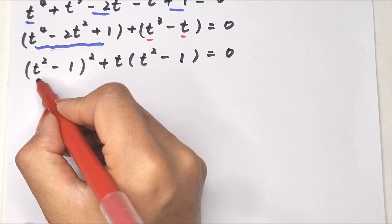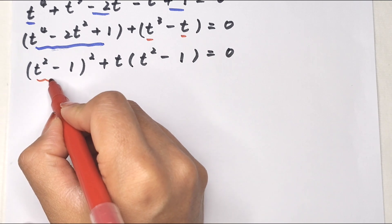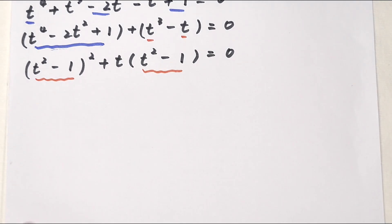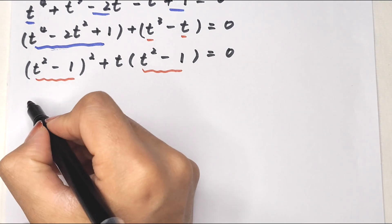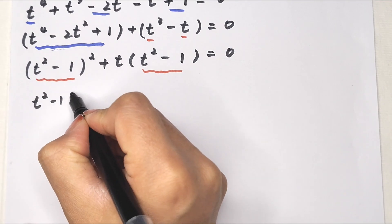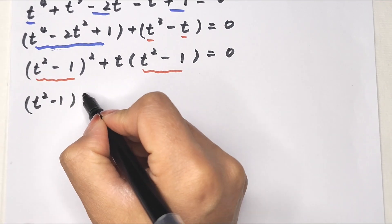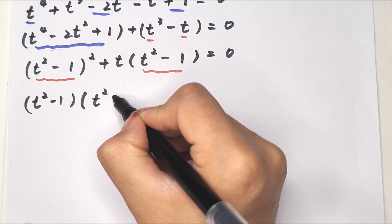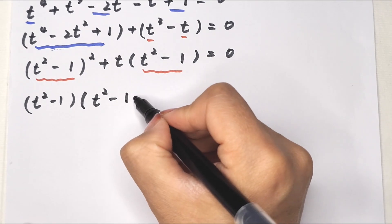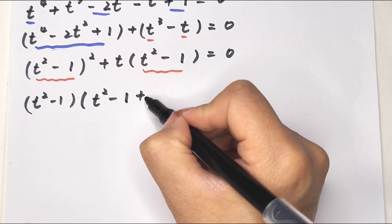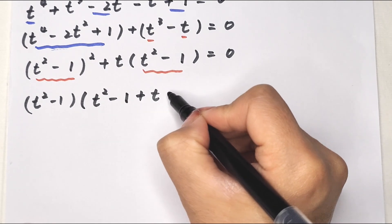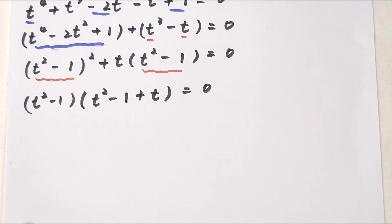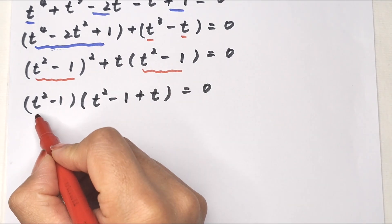Then (t squared minus 1) is common in both parts, so we factor it out of the bracket: (t squared minus 1) times (t squared minus 1 plus t) equals 0.